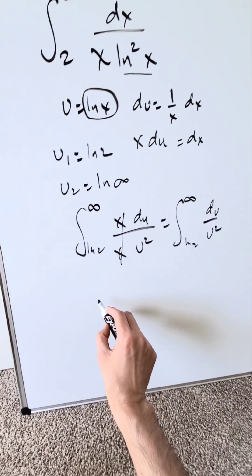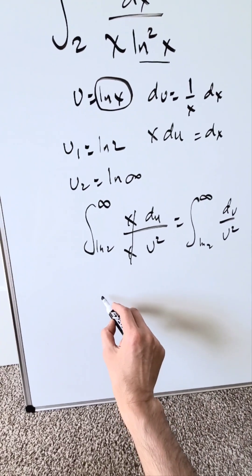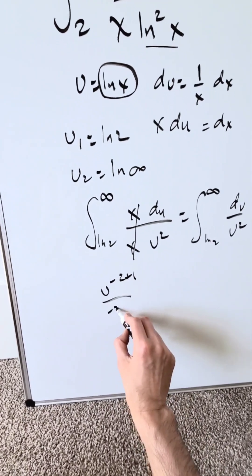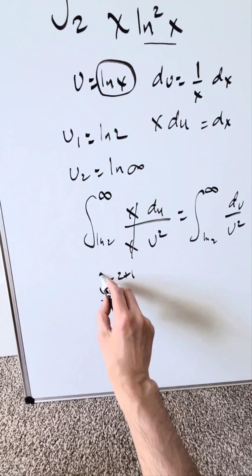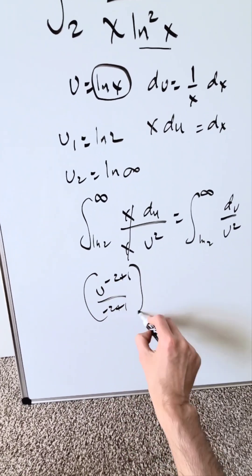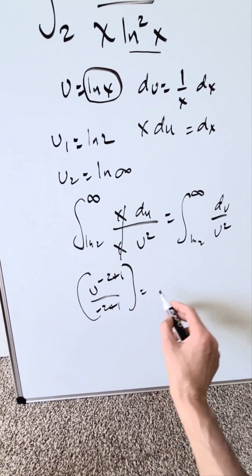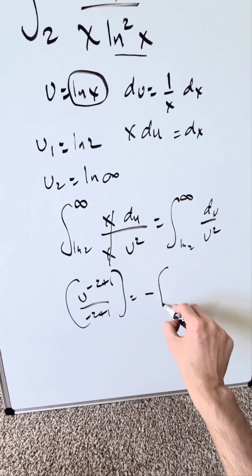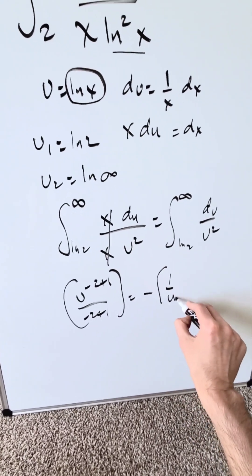Polynomial integration: you're looking at u to the minus 2, which integrates to u to the minus 2 plus 1 over minus 2 plus 1. When you clean that out, the antiderivative is minus 1 over u.